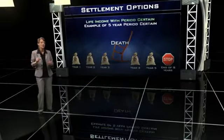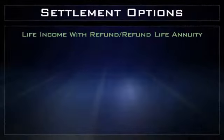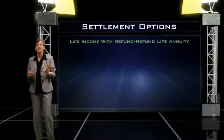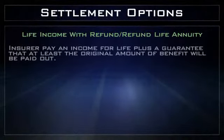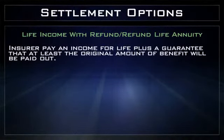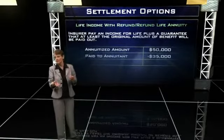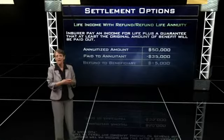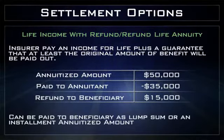If that guarantee isn't good enough, there's one other option: refund life. Under refund life, the insurance company guarantees that at least the amount that was in the annuity at the time it was annuitized is going to be paid out to somebody. The annuitant will receive payments for as long as they live, but if they happen to die before that total had been paid out, the balance would be paid to their beneficiary. For example, with a $50,000 annuity, if only $35,000 had been paid out at the time of the annuitant's death, the remaining $15,000 would be paid to a beneficiary in a lump sum or in installments.